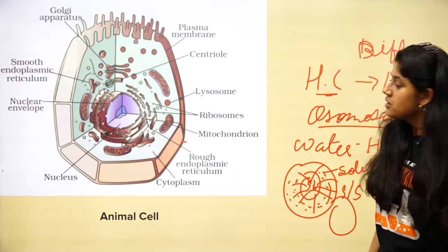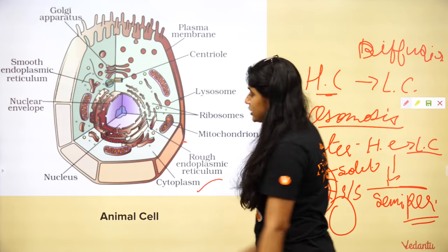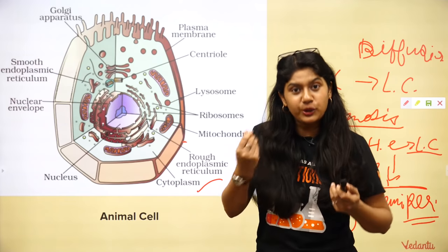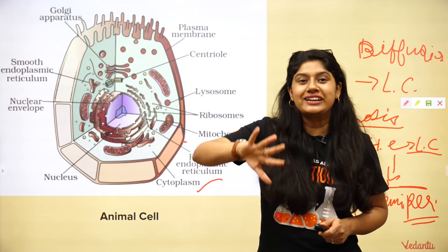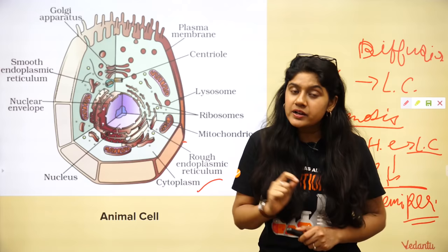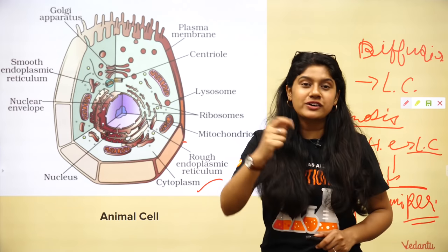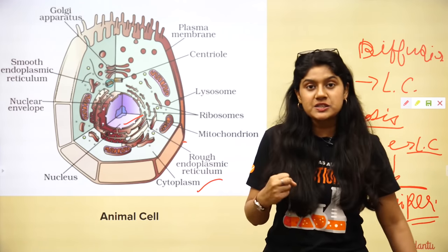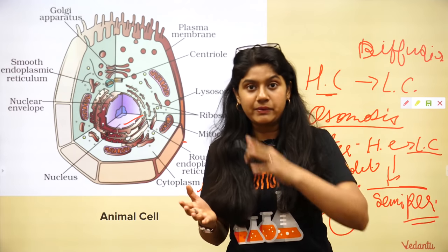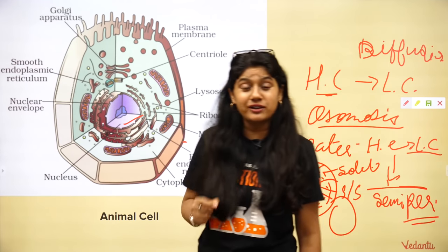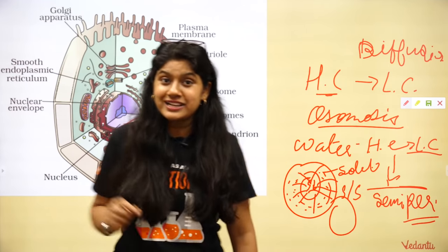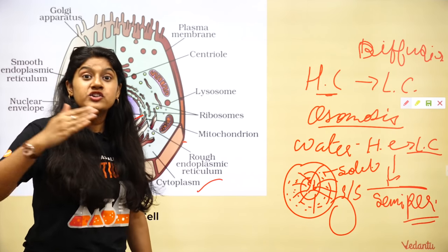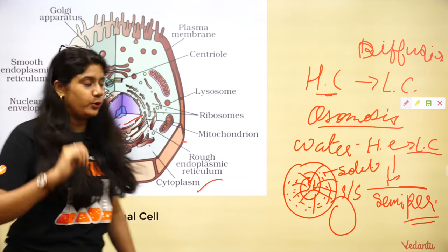The cytoplasm is a jelly-like fluid structure on which the organelles are floating. The nucleus is the brain of the cell. It has a double membrane with nuclear pores on it, and these pores help in the transfer of molecules in and out of the nucleus.